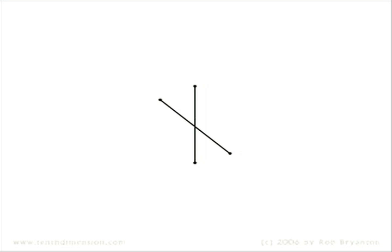If we now take our first dimensional line and draw a second line crossing the first, we've entered the second dimension. The object we're representing now has a length and a width, but no depth. To help us with imagining the higher dimensions, we're going to represent our second dimensional object as being created using a second line which branches off from the first.